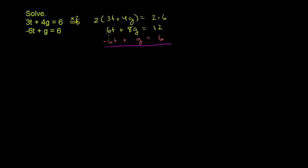So let's add the left-hand sides together. When we do that, these 6t's cancel out. That was the whole point behind multiplying this first equation by 2, so that the 3t becomes the 6t. And we're left with 8g plus g is 9g is equal to 12 plus 6, which is 18.